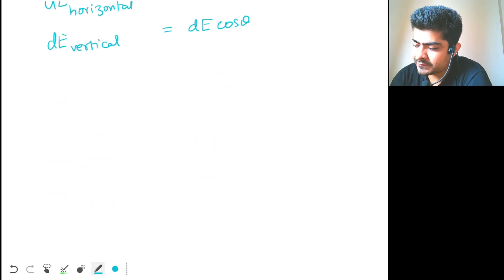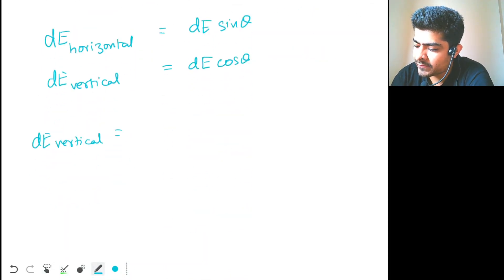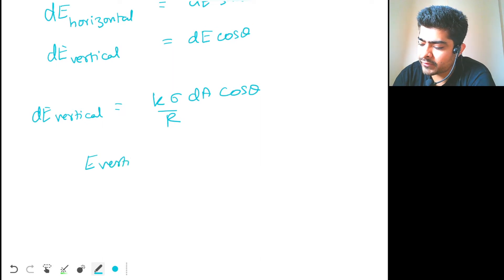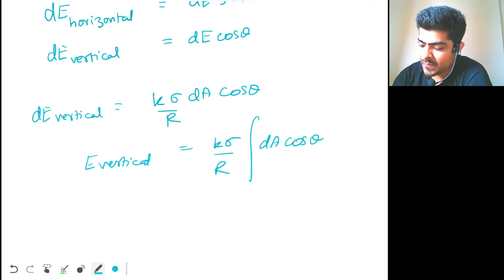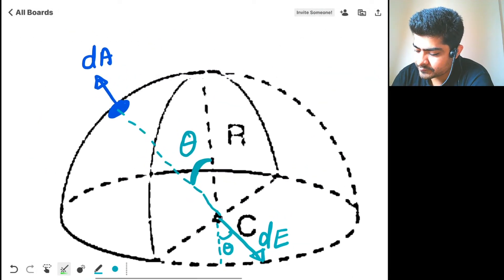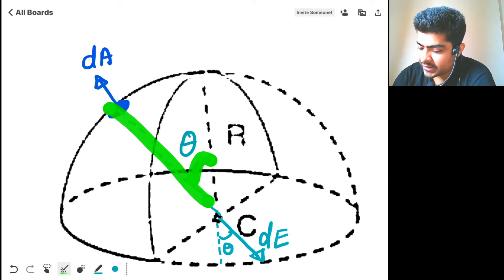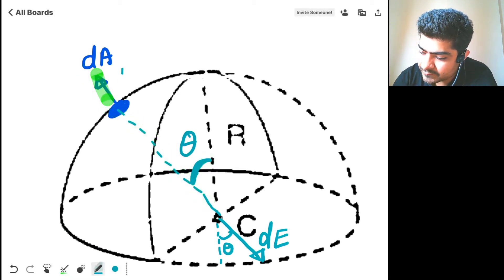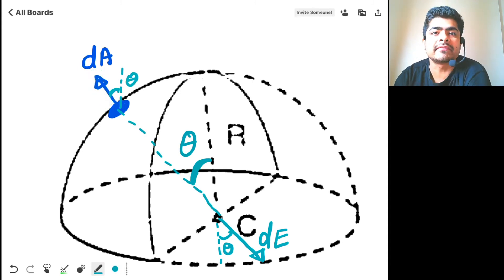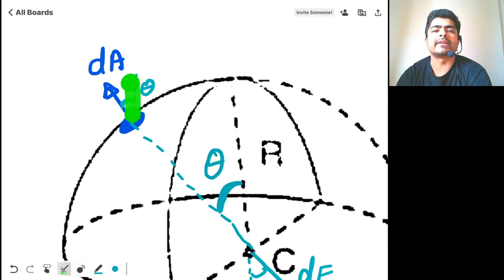Let's solve for the vertical component first. dE vertical will be k·sigma·dA/r² times cos theta. So electric field along vertical will be k·sigma/r² times the integration of dA cos theta. What is the meaning of dA cos theta? Since dA is making angle theta with the vertical, dA cos theta is the vertical component of the dA vector.